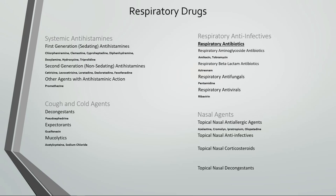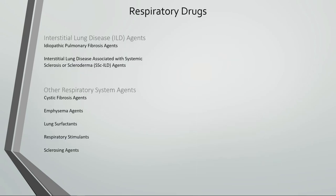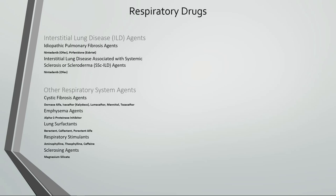Nasal agents include topical nasal anti-allergic agents, topical nasal anti-infectives, topical nasal corticosteroids, and topical nasal decongestants. Finishing off respiratory drugs, we have interstitial lung disease agents including idiopathic pulmonary fibrosis agents and interstitial lung disease associated with systemic sclerosis agents. Other respiratory system agents include cystic fibrosis agents, emphysema agents, lung surfactants, respiratory stimulants, and sclerosing agents.